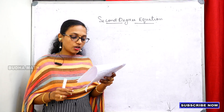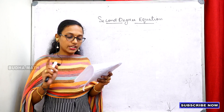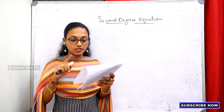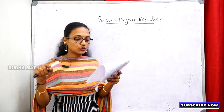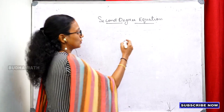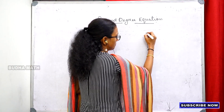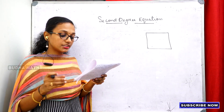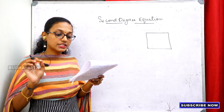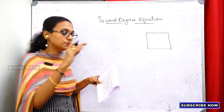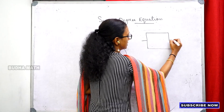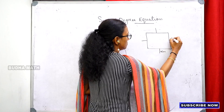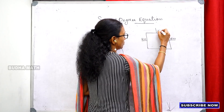Next question: A square ground has a 2 meter wide path all around it. The path is 2 meters on each side. So the sides add 2 meters on both ends.